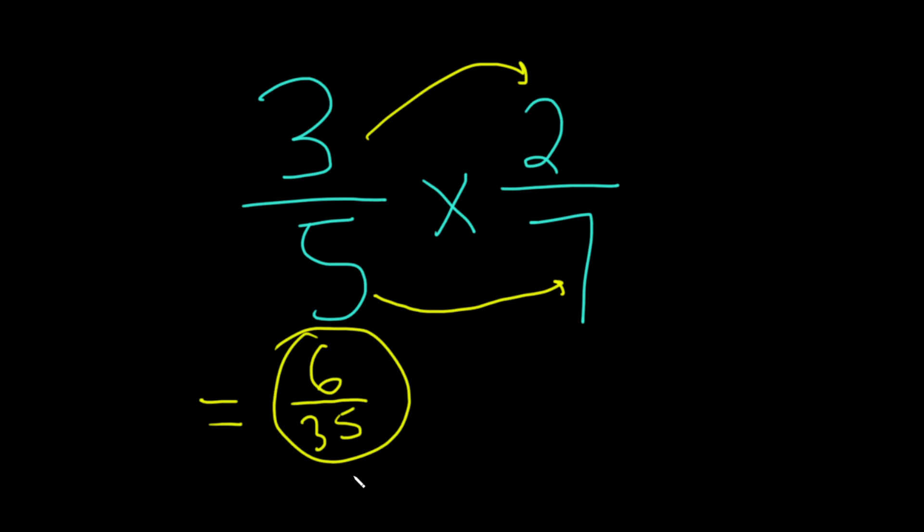there was not. So again, you just multiply straight across. 3 times 2 gives you 6, that goes upstairs in the numerator. And then 5 times 7 gives you 35, that goes downstairs in the denominator. I hope it's been helpful. Good luck.